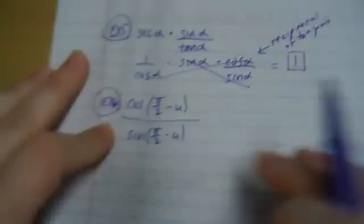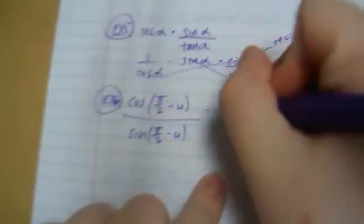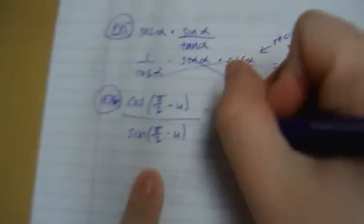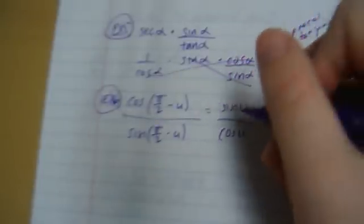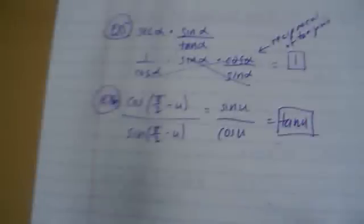Example 6: I have cosine of (pi over 2 minus u) over sine of (pi over 2 minus u). This doesn't look like anything we've done so far, but if we look at the cofunction identities on our chart: cosine of (pi over 2 minus u) equals sine u, and sine of (pi over 2 minus u) equals cosine u. So we end up with sine over cosine, which is tangent.